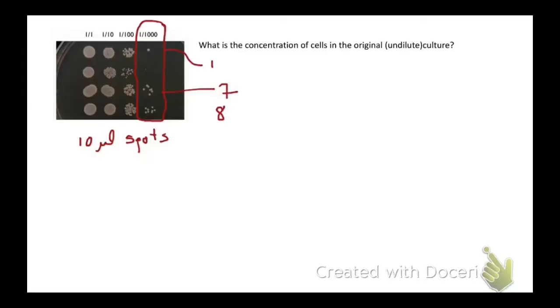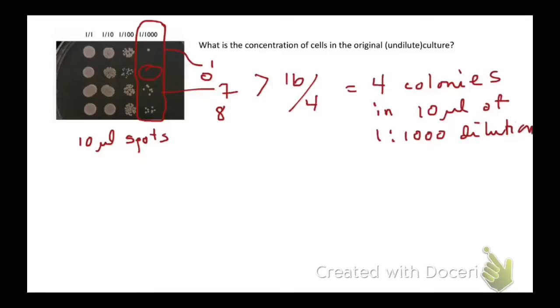Let's count. I count 1, 7, and 8, and I have 0 from the second row. We're going to take the average. That means we had 16 total with 4 samples, so we have 4 colonies average in 10 microliters of a 1 to 1,000 dilution.